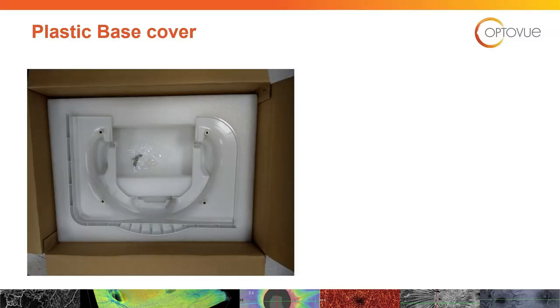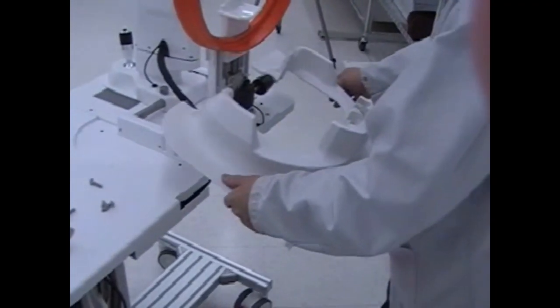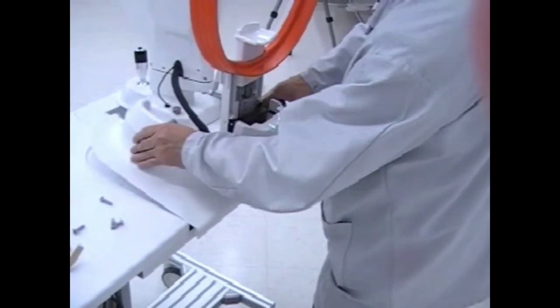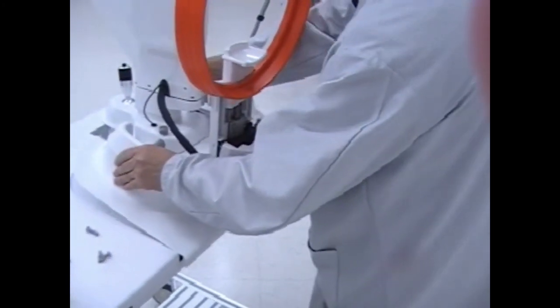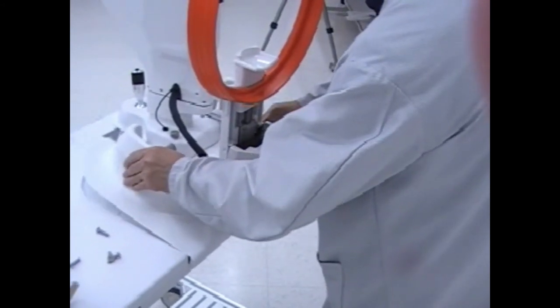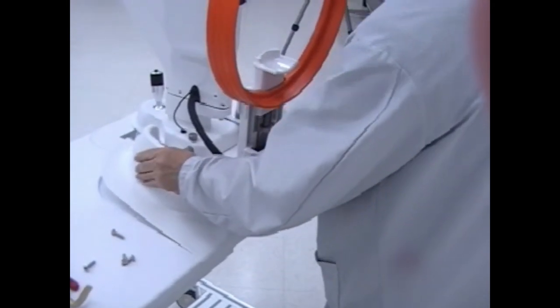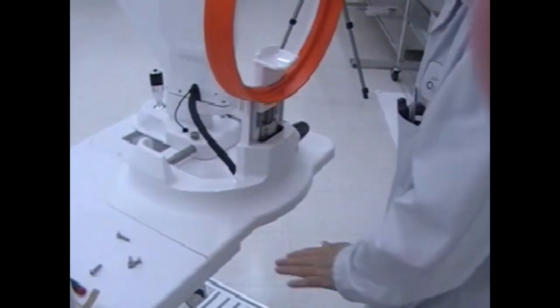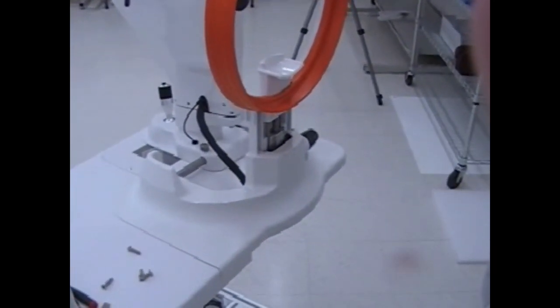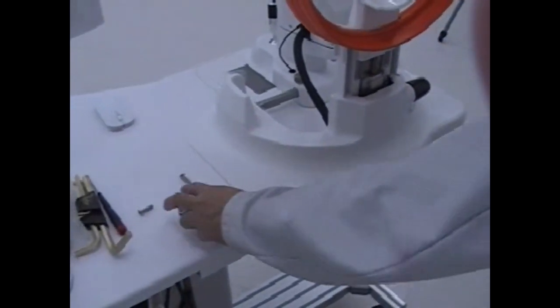Having removed any protective film covering, apply the joystick cover. Take care around the adjustment knob. Slide it into the groove, then push forward. Wiggle it a little and allow it to snap into place. Do not apply a lot of pressure to force it. There are four screws located under the table to lock it down.